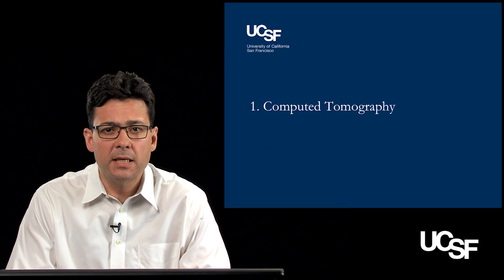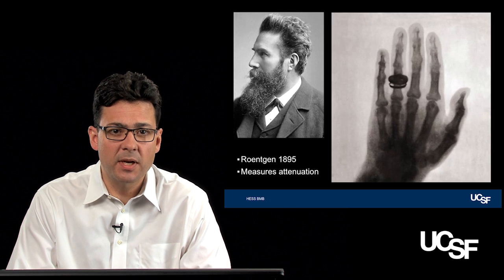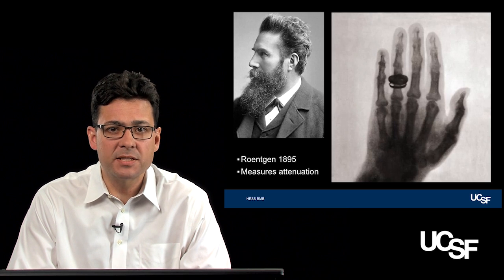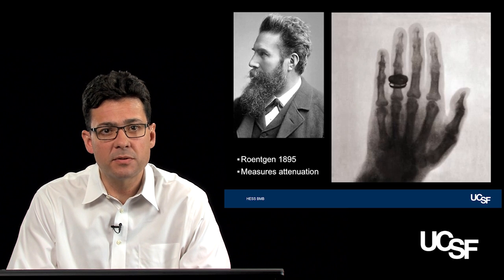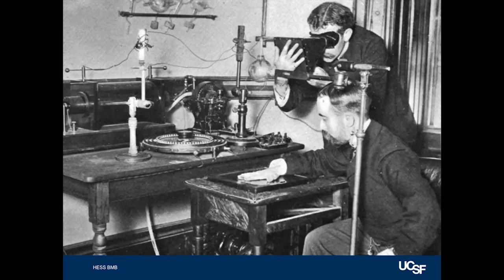Starting with computed tomography, historical background is very helpful in understanding CT. CT is based on X-rays, energy at a certain wavelength, discovered by Wilhelm Röntgen in 1895. X-rays, when passed through an object, are attenuated and reveal an image of the structure. This is actually Dr. Röntgen's wife's hand, showing the ring on her hand — the very first X-ray obtained. The subject has their hand on a flat plate, that's the detector, and the imager has a source of X-rays on top passing through the hand onto the detector plate to create an image.